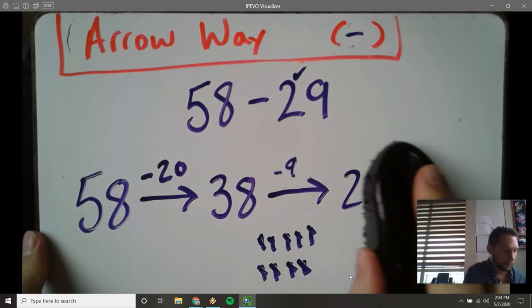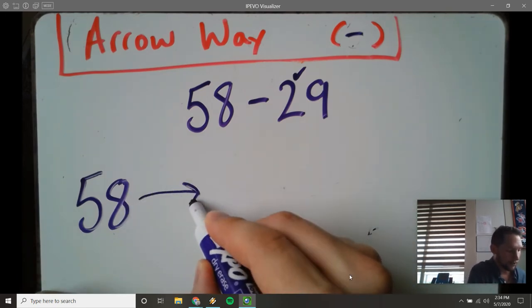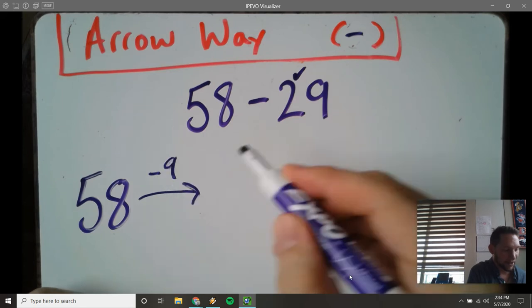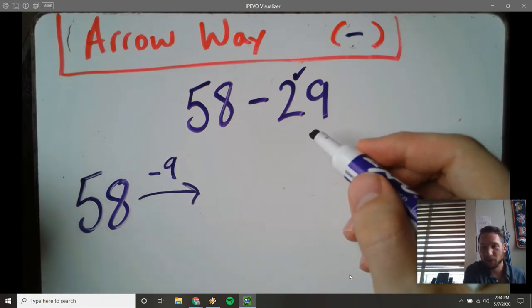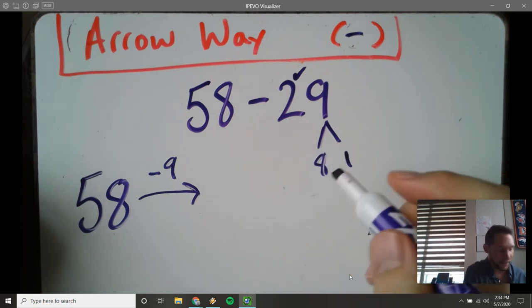58 minus 9. I could do that first. Minus 9. But actually, if I am really good with my number bonds, I would actually turn this 9 into an 8 and a 1 to make it the easiest.